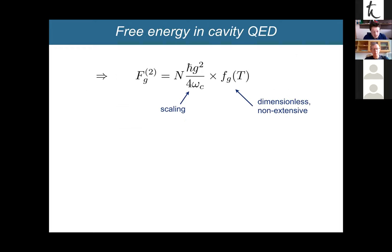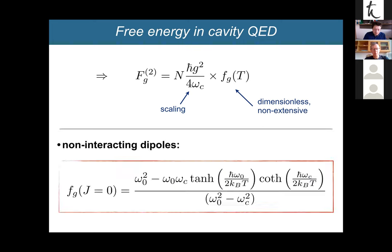Everything so far was perturbation theory in small G. The question is: how valid is this in the ultra-strong coupling regime? We can compare the perturbative results (red line) with exact calculations, and we see that perturbation theory is really valid up to the point where G is on the order of omega_c and even beyond. This means perturbation theory can give exact analytic results in the collective ultra-strong coupling regime — which is actually the regime where most experiments operate today.